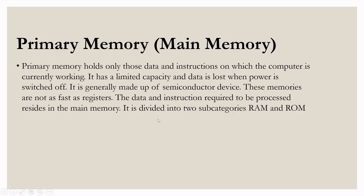Now let's discuss primary memory. Primary memory, also known as main memory, holds only those data and instructions on which the computer is currently working. It has a limited capacity and data is lost when the power is switched off. It is generally made of semiconductor devices. These memories are not as fast as registers. The data and instructions required to be processed reside in the main memory. It is divided further into two subcategories: random access memory (RAM) and read only memory (ROM).